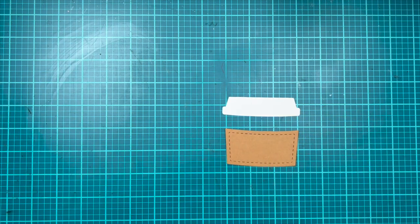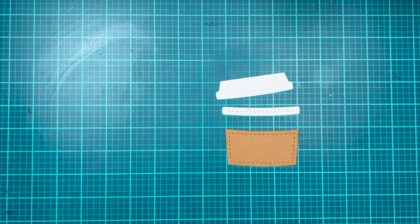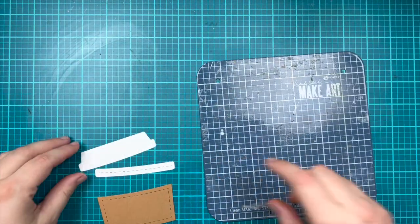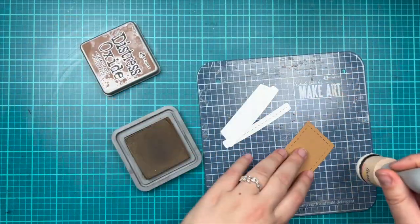While that's drying we'll move on to our next part of the card, which is our die cut. I'm just going to grab that coffee lid and sleeve from my die cuts that I had from showing you the different pieces earlier, and then I die cut the lid out of some white cardstock as well.